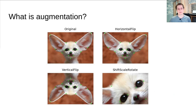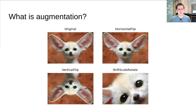At the beginning we need to say a few words about what image augmentations are. Augmentations are different transforms of images that change the image but don't change the useful data on the image. On the slide you can see some of these transforms — flips and affine transformations of images.